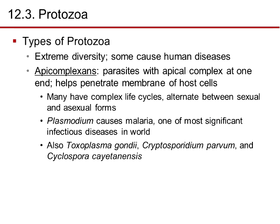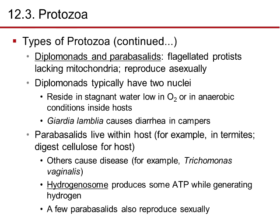The types of protozoa show great diversity, and some cause human disease. Apicomplexans are parasites with an apical complex at one end that helps penetrate the membranes of host cells. Many have complex life cycles, alternating between sexual and asexual forms. Plasmodium, the cause of malaria, is one of the most significant infectious diseases in the world. Others include Toxoplasma gondii, Cryptosporidium parvum, and Cyclospora cayetanensis.